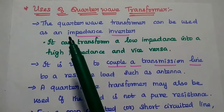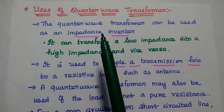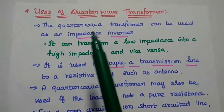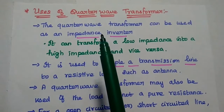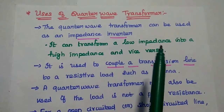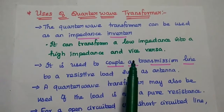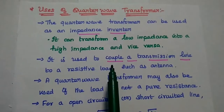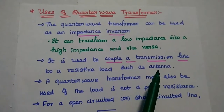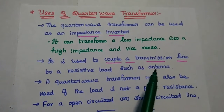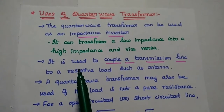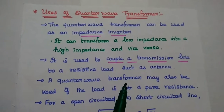Next, the importance or uses of the quarter wave transformer. First, it can be used as an impedance inverter — that means it can transform a low impedance into a high impedance and vice versa. It is also used to couple a transmission line to a resistive load such as an antenna, which is a fixed load, matching the transmission line to that resistive load.